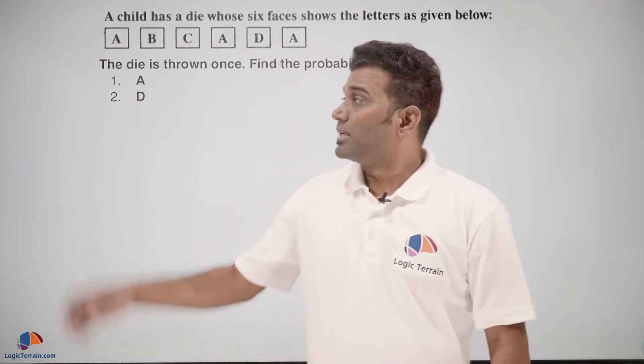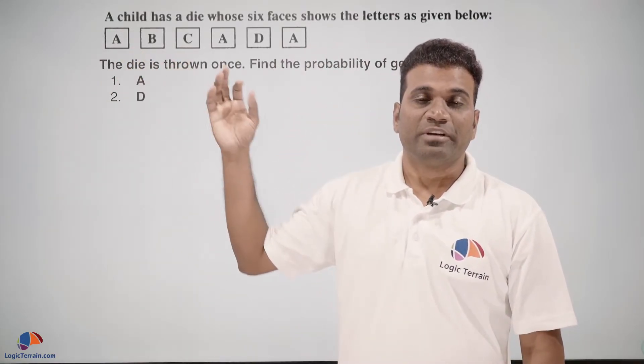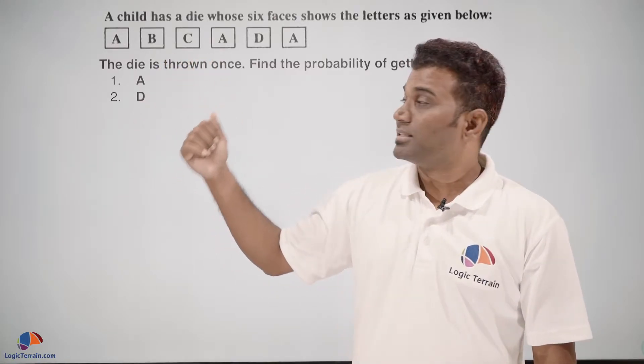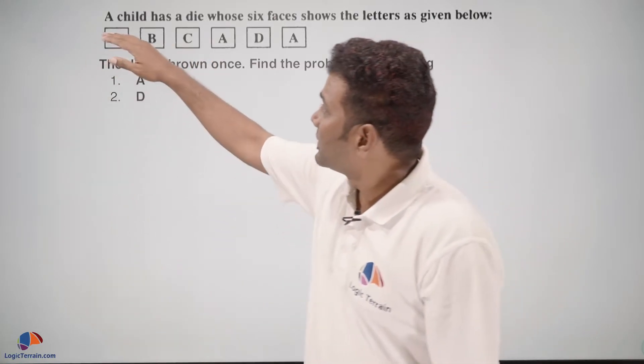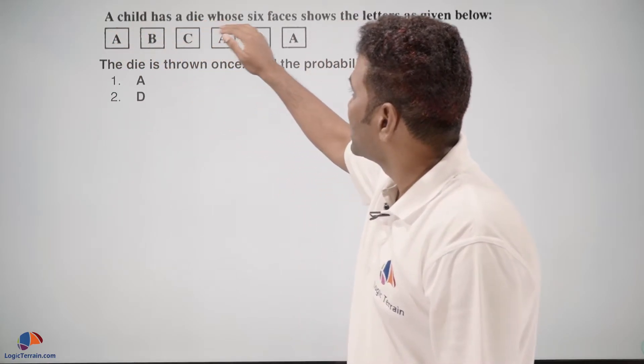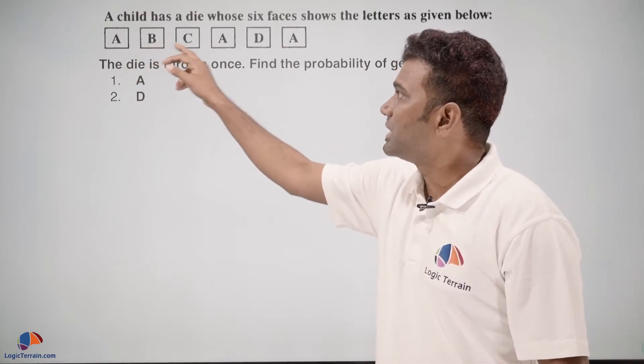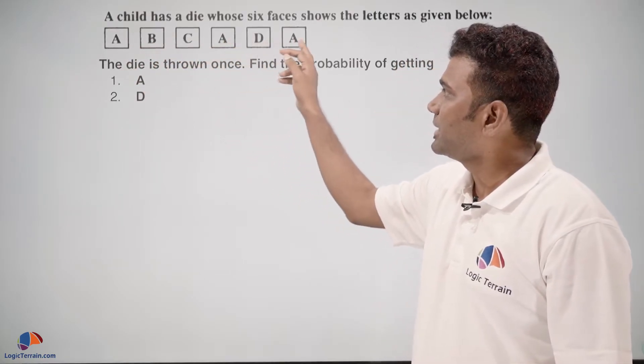Hello dear students. Here is our next question—very important. This is one of the previous year's board questions. The question goes like this: a child has a die whose six faces show the letters as given below: A, B, C, A, D, A.